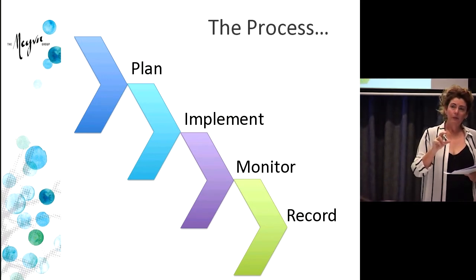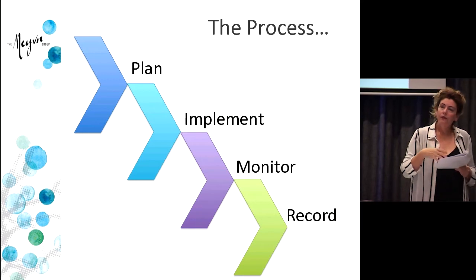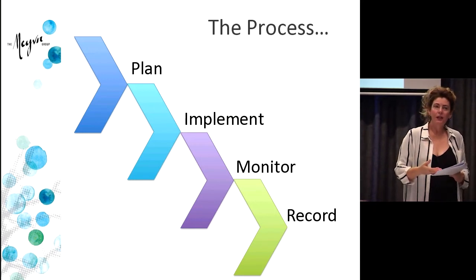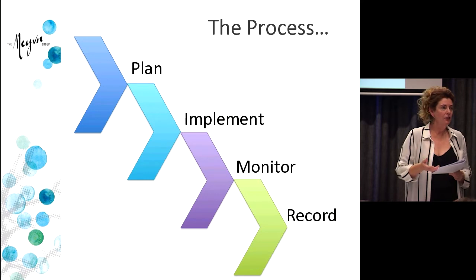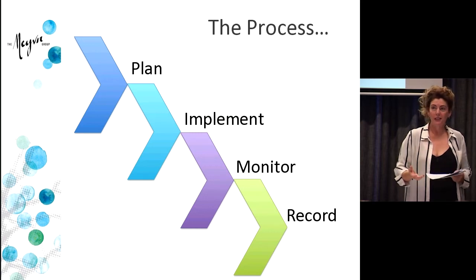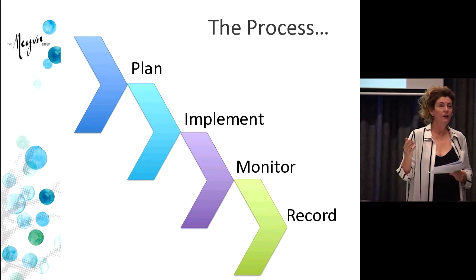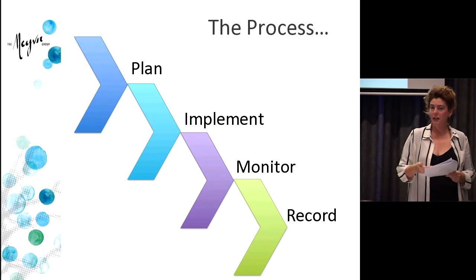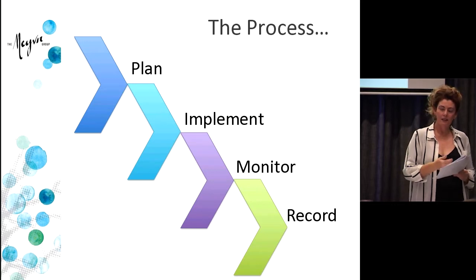Once you understand the disability, you can think about what impact that will have on your teaching, learning and assessment process. Whoever is going through this planning process needs to understand how teaching, learning and assessment is actually going to happen — they'll need information about the teaching process, materials, how the courses are structured, and how assessment happens, so they can think about what needs to be adjusted. In a lot of these instances, we are relying on the person self-identifying early enough that we can actually start this planning process, and of course there will be situations where that doesn't happen.